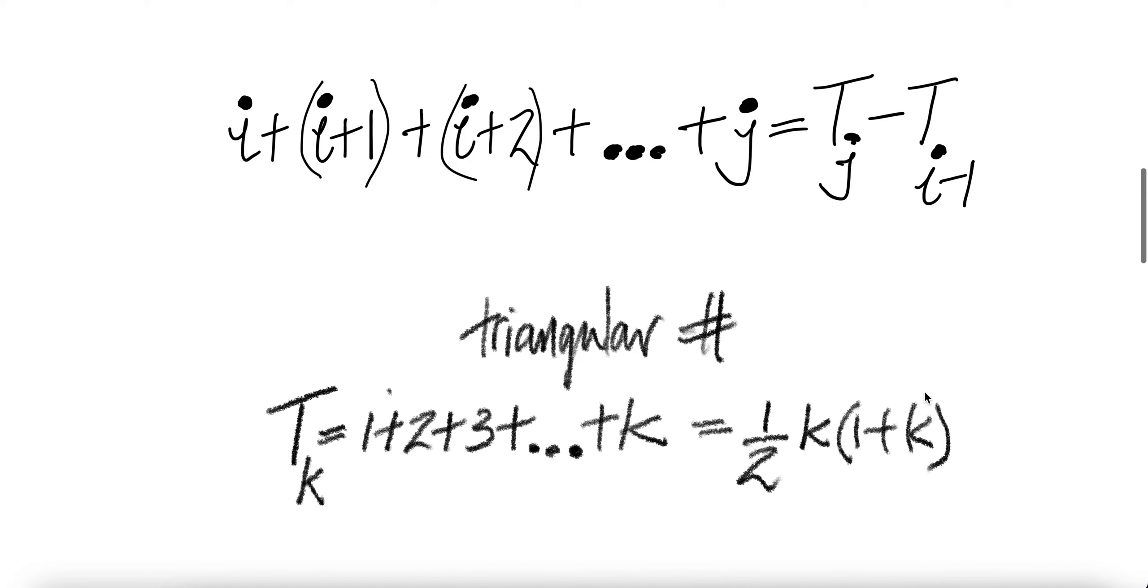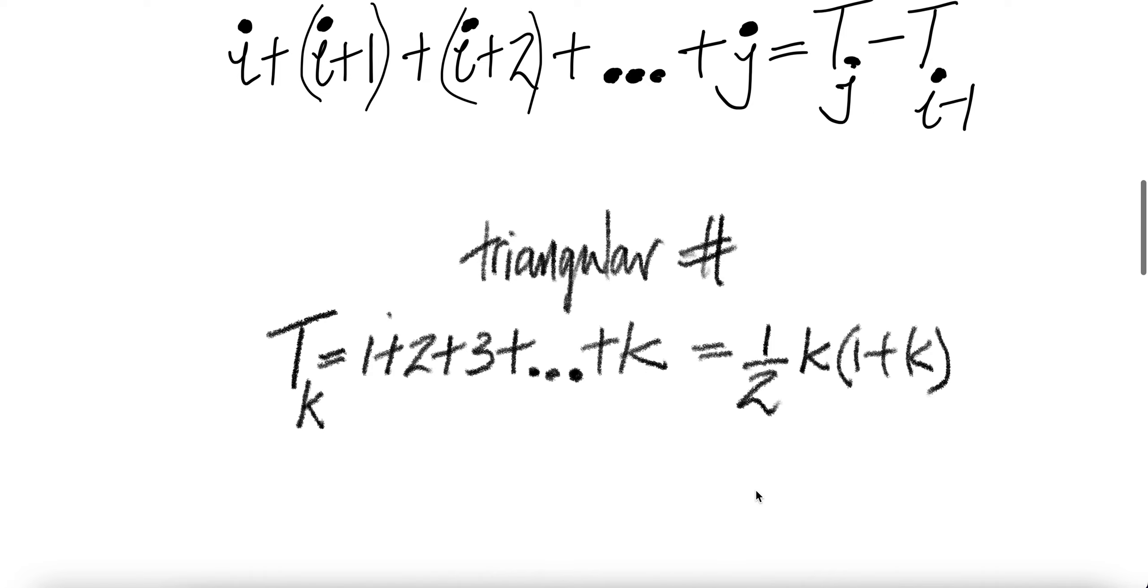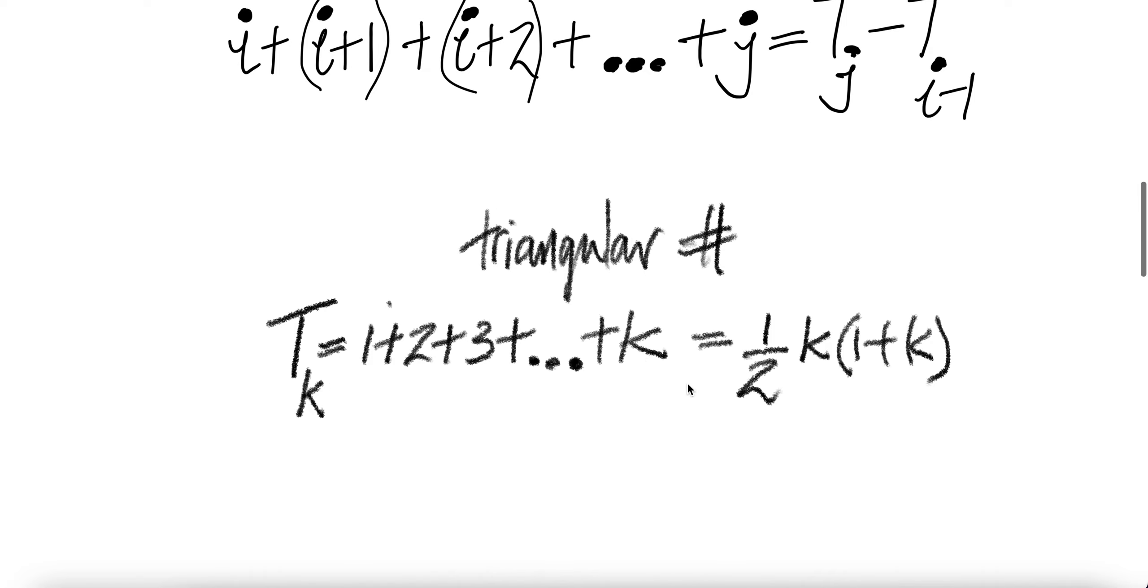Before that, let us remind ourselves what a triangular number is. The K triangular number is when you sum 1 plus 2 plus 3 all the way to plus K. This sum can be obtained from K, the number of terms, divided by 2, times the first term plus the last term K. This will get you the sum, or K triangular number.